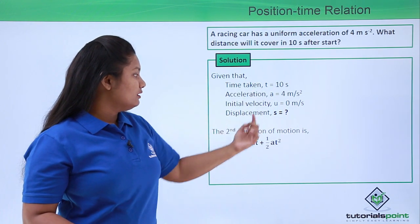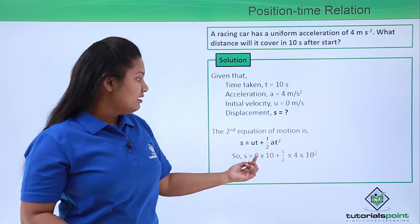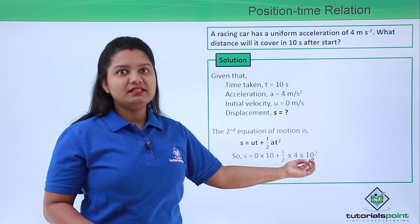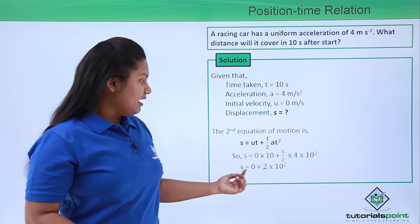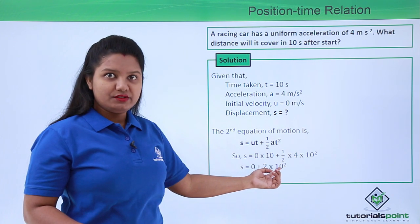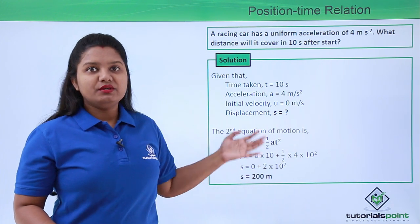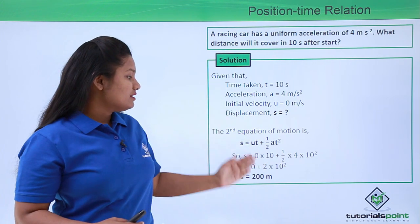Now let us put all these values into the equation. We have s equals 0 into 10 plus half into 4 into 10 squared. On evaluating this, we have s equals 0 plus 2 into 10 squared, which is 200 meters. So at the end of 10 seconds, the car has traveled 200 meters.